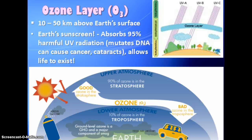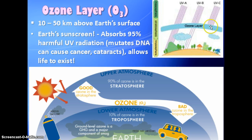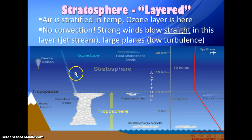The ozone layer is a layer of O3 gas about 10 to 50 kilometers above Earth's surface, acting as our sunscreen. It absorbs about 95% of harmful UV rays — it filters out all UVC rays, many UVB rays, and some UVA rays. This is a major ecosystem service, because UV rays can mutate our DNA and cause serious problems. The ozone layer is also part of why the stratosphere has its stratified layers.